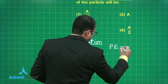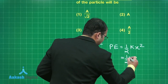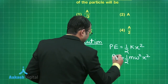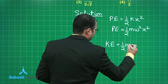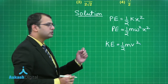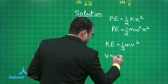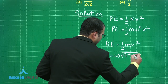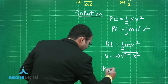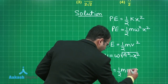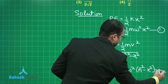For a particle performing SHM, the potential energy is given by half kx squared, or equivalently half m omega squared x squared. The kinetic energy is half mv squared. The velocity at any position x other than the mean or extreme position is given by v equals omega times the square root of (a squared minus x squared). Substituting, kinetic energy equals half m omega squared times (a squared minus x squared). Call these equation 1 and equation 2.